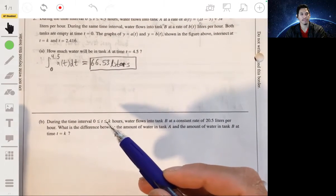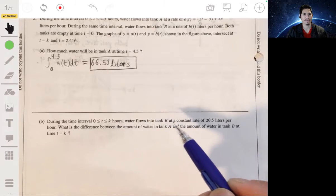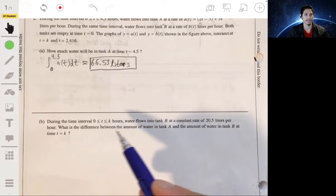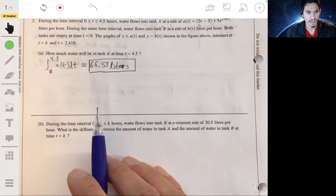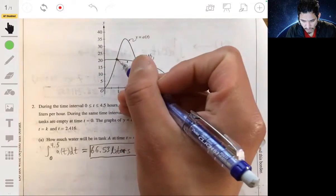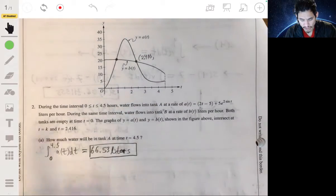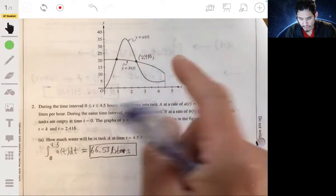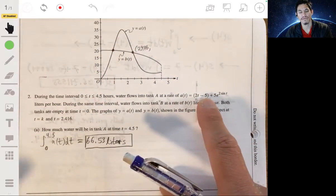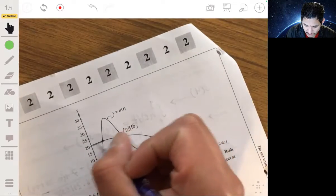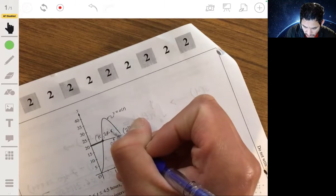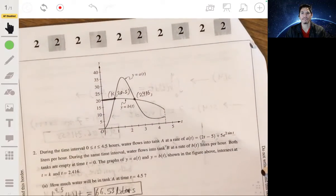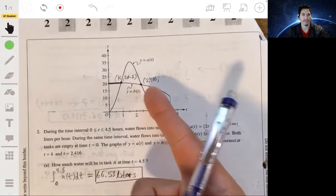Part B: during the interval from T equals 0 to k hours, water flows into tank B at a constant rate of 20.5 liters per hour. What's the difference between the amount of water in tank A and the amount of water in tank B at the time T equals k? Okay, so this is interesting because we want to essentially know what k is first. And k can be found by finding the value for T that will give you 20.5. Because think of this as a horizontal line.